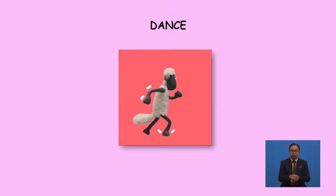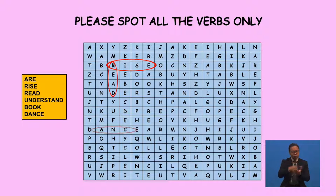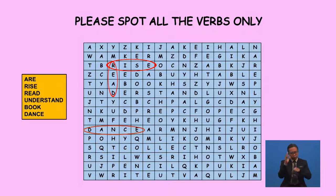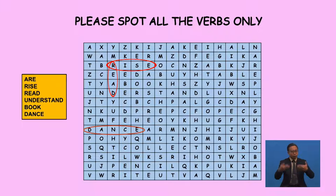You see, what action am I doing? Yes, I'm dancing. So dance is a verb. Can you find the verb 'dance'? Continue searching. Another 20 seconds to go.